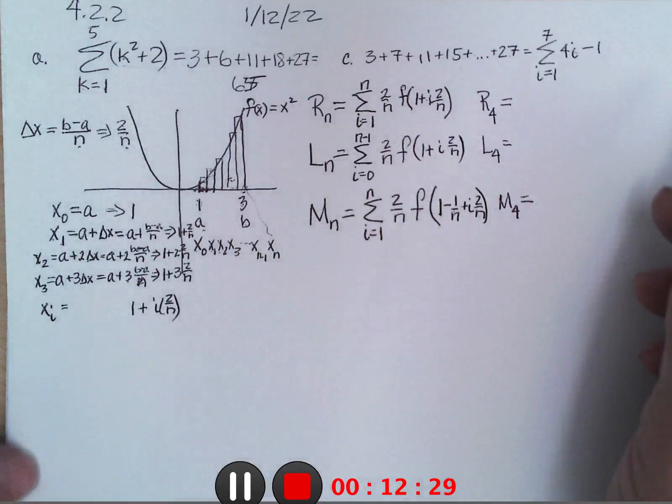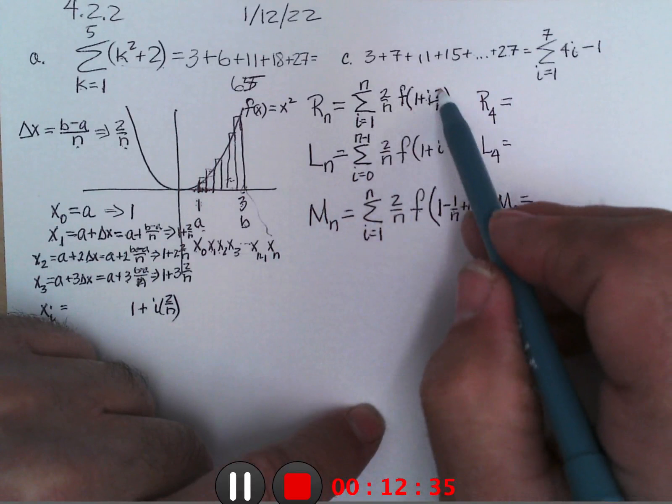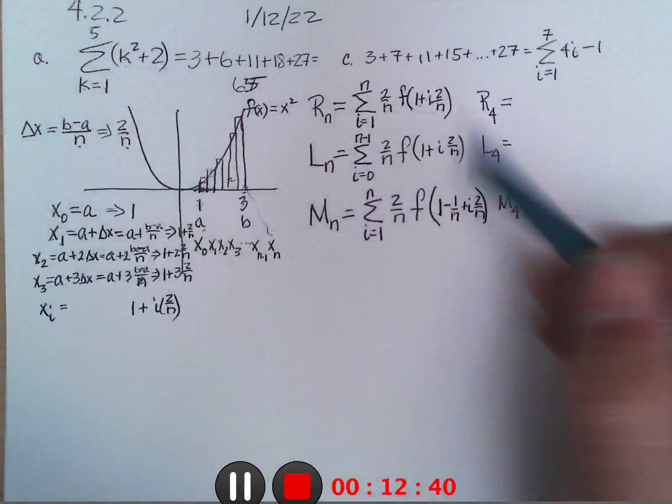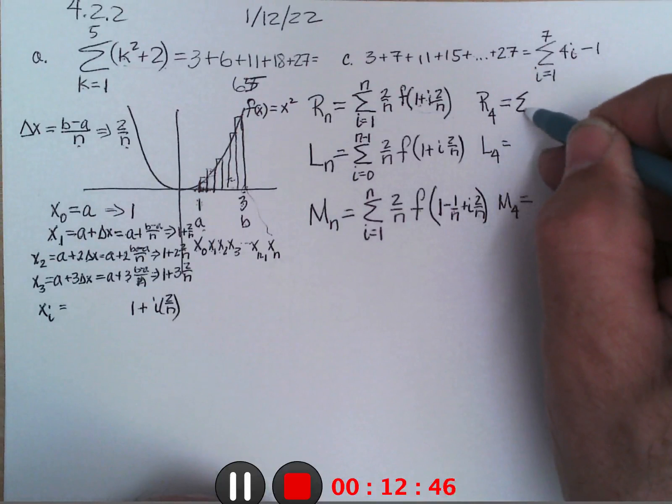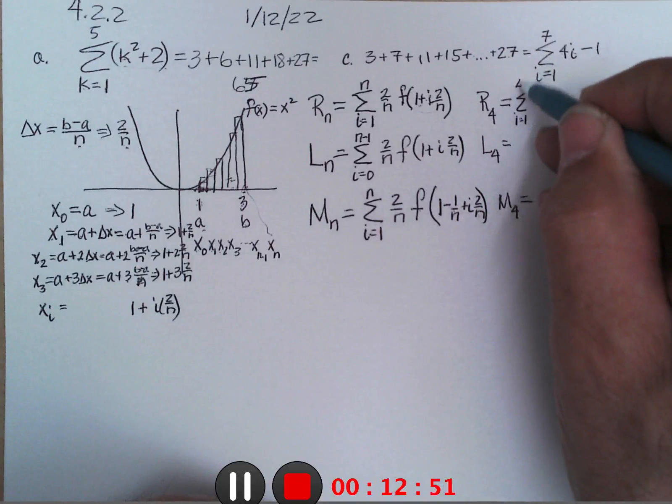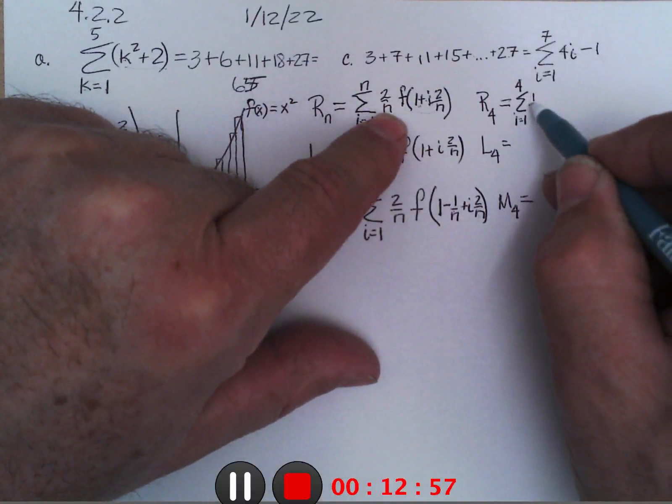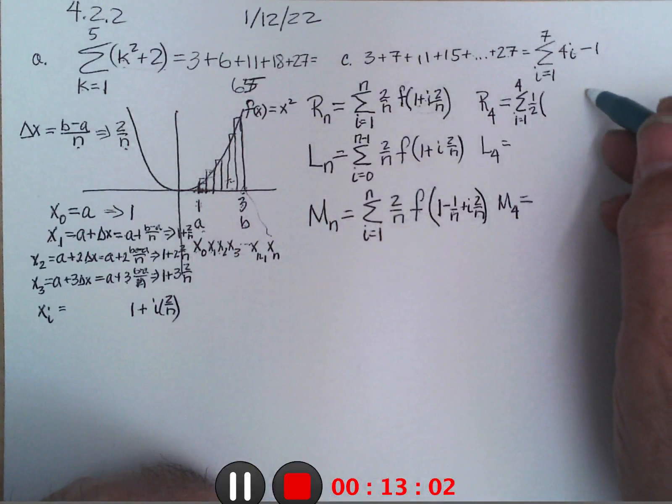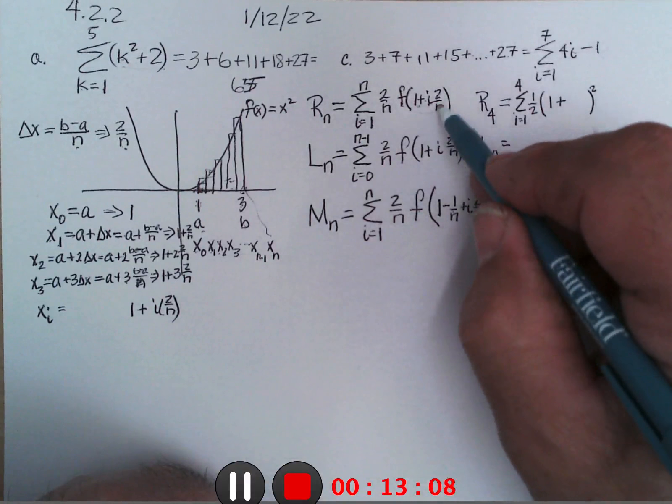So then in class what I did was say, okay, let's figure these out for R4. So R4 and L4 and for M4. So R4, since we're doing f, f takes the x, this is what the x we're going to do, and it says square it. And if we're doing 4, it would be the sum from i equal 1 to 4 of 2 over 4 which is 1 half, f which says square the x, and this would be 1 plus 2 over 4 is 1 half times i.